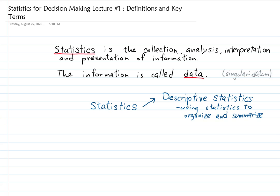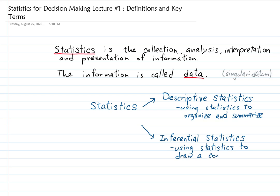Now, if somebody wanted to use that information to decide what to do in the future, then they're not just describing something — they're using statistics to draw a conclusion. That is called inferential statistics. So statistics are used either to organize and summarize, which is descriptive, or to draw a conclusion, which is inferential.